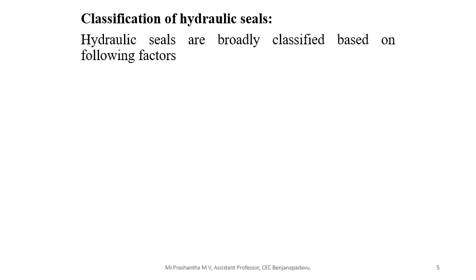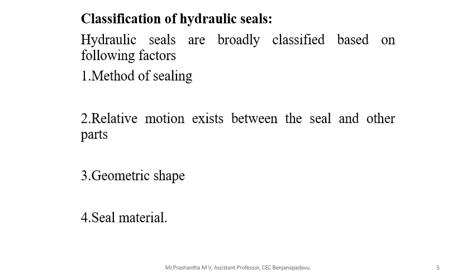Classification of hydraulic seals: hydraulic seals are broadly classified based on several factors. They are: first, based on method of sealing; second, based on relative motion existing between the seal and other parts; third, based on geometric shape; and last, based on seal material.